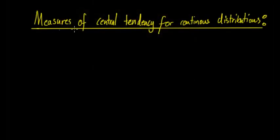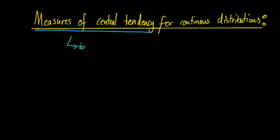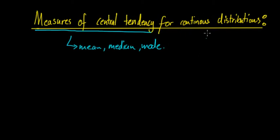Hey guys, so in this video we're going to be looking at the measures of central tendency for continuous distributions. We've done measures of central tendency before, and they are the mean, median, and mode. Now we're going to look at how we can calculate them for continuous distributions, specifically when we're looking at the probability density function — when we have the graph and the area underneath. It's slightly different to calculate for all three, but they do mean the same things.